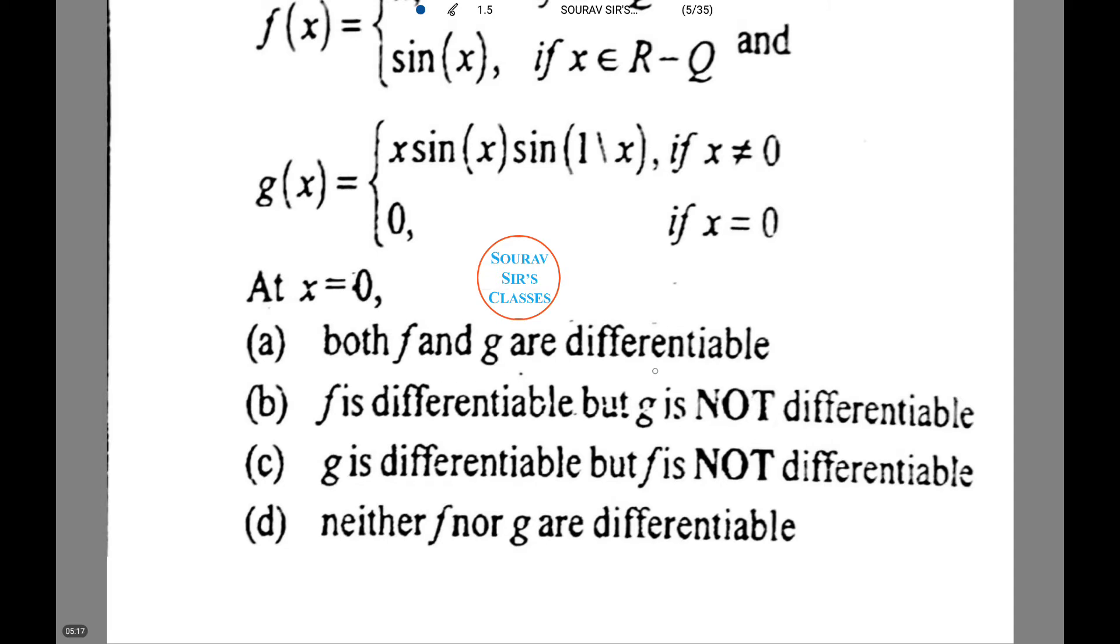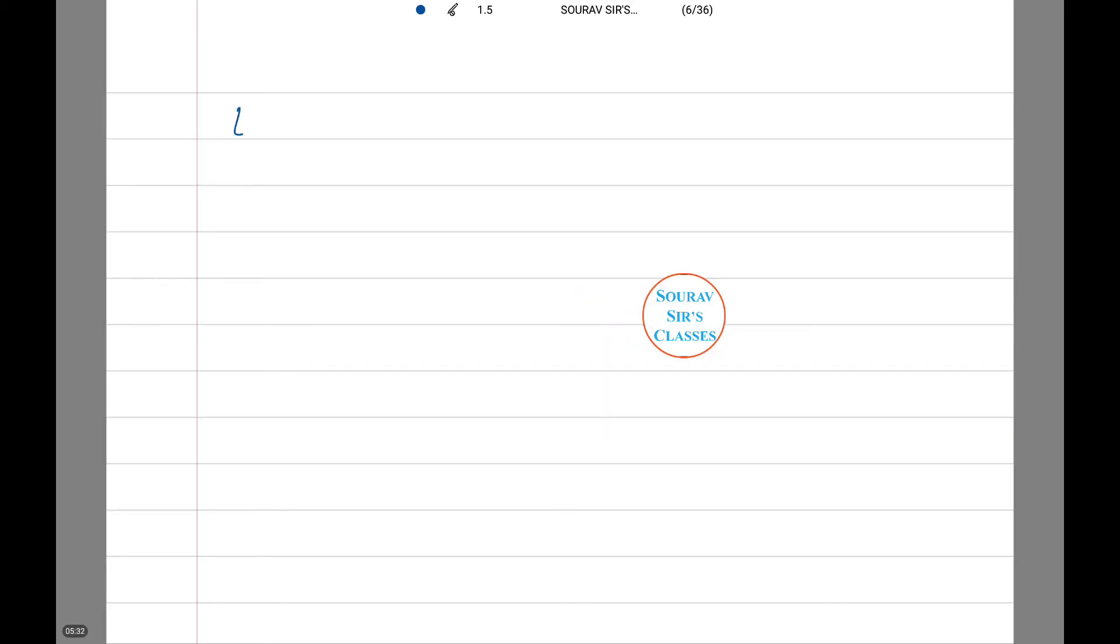Is it A, both f and g are differentiable; B, f is differentiable but g is not; C, g is differentiable but f is not; or D, neither f nor g are differentiable? Let's see how to do this. Limit h tends to 0 of [f(h) minus f(0)]/h. This equals limit h/h, which equals 1. Therefore, f(x) is differentiable at x equals 0.